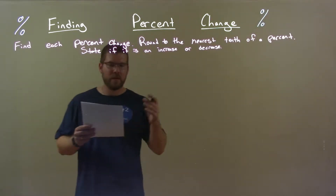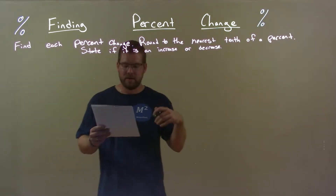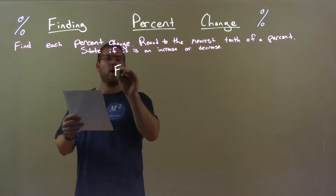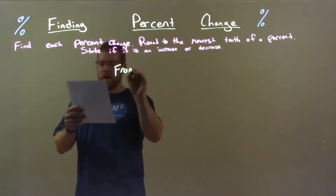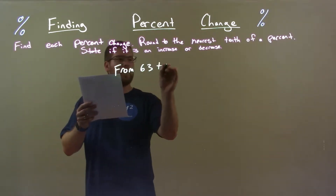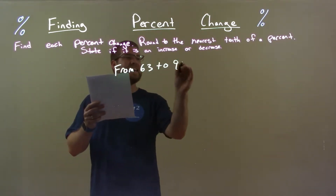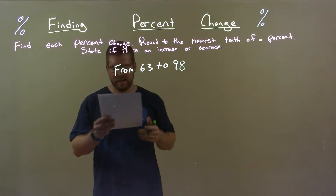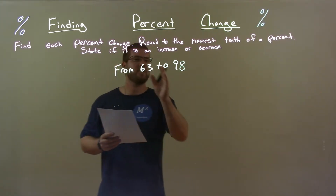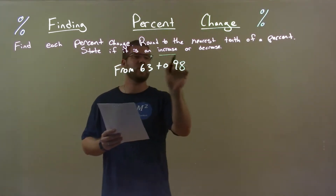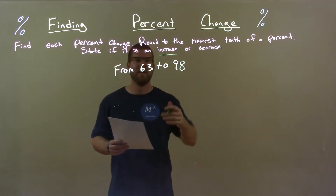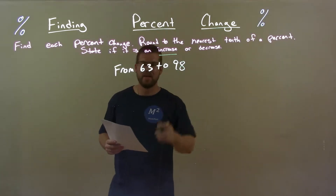So if I was given this problem: from 63 to 98. Clearly this is an increase — 63 to 98, that is an increase.